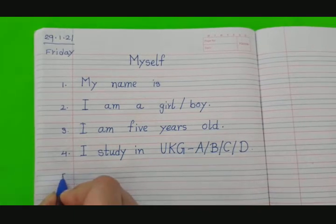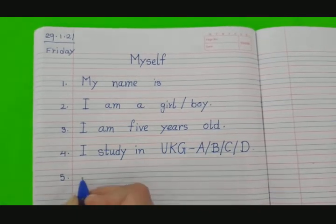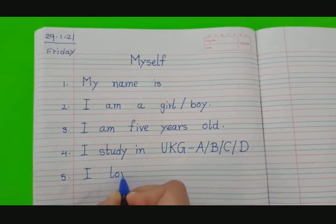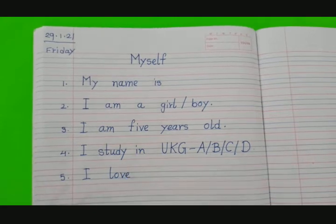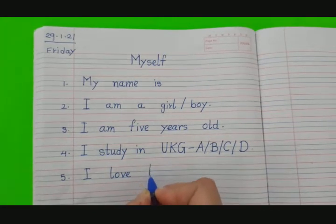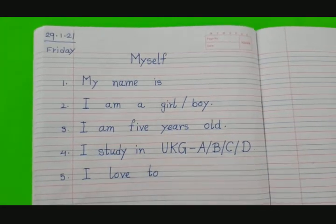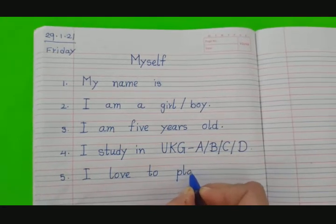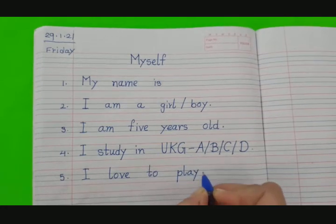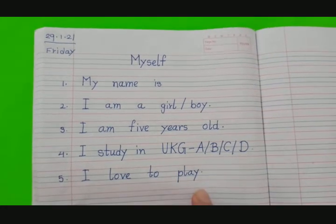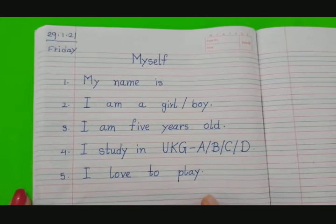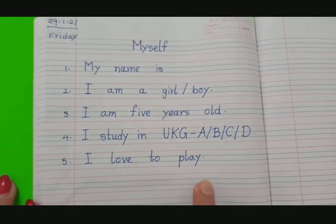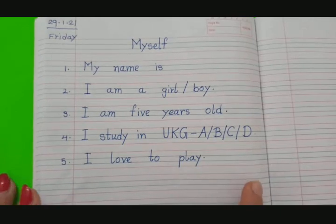Now the last sentence: I love to play — L-O-V-E, T-O, P-L-A-Y. Full stop. I love to play. Mujhe khelna pasand hai. You all will write the same sentence — everyone loves to play, don't they?